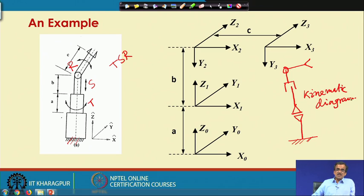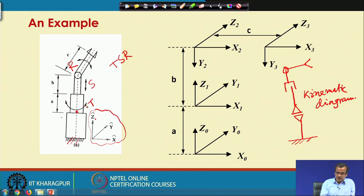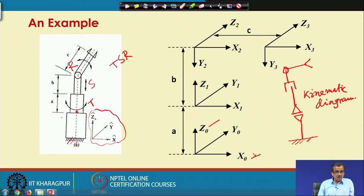Now let us assign the coordinate system. The first thing is to concentrate on the reference coordinate system. This is Z, X, and Z cross X is Y. The first joint is the twisting joint, which will be rotated, and Z will be along this particular direction. So we select this as Z0, and X0 is taken in the same direction as the reference. This is your X0 and Y0 is Z cross X, so this is your Y0.